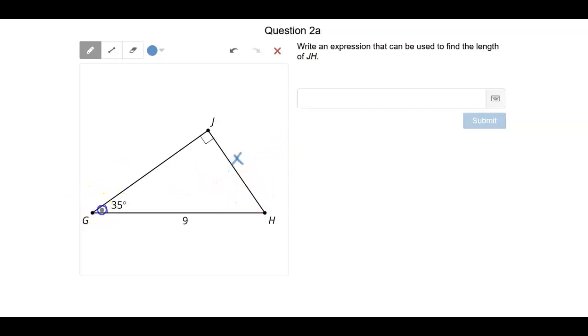We know this angle right here, so this can be our theta. We know that this is our hypotenuse because it's opposite the 90 degree angle.